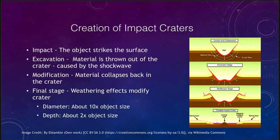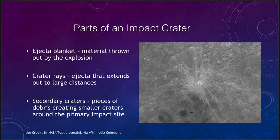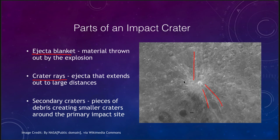Now let's look at some details of an impact crater. Let's go to the moon and look at an impact crater we see there. Some of the parts we see coming out are the ejecta blanket — right around the edge we'll get ejected material that is thrown out by the explosion — and further out we will see crater rays, extending outward away from the crater.